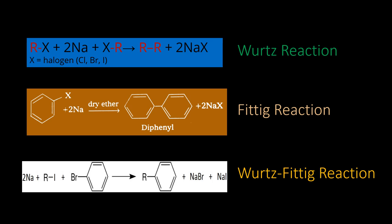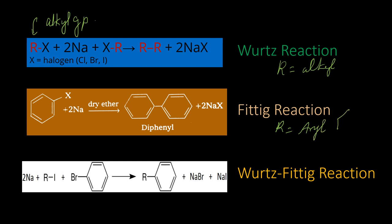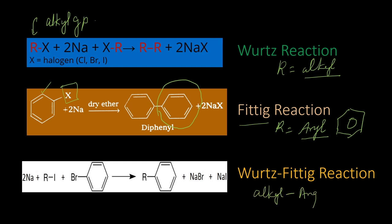To summarize: Wurtz reaction is a coupling reaction used to prepare alkanes and hydrocarbons. It prepares symmetrical alkanes. The number of carbon atoms in the product is even. It uses only dry solvents — dry ether or tetrahydrofuran — because sodium metal reacts violently with water. Wurtz reaction uses aliphatic alkyl halides, Fittig reaction uses aryl halides, and Wurtz-Fittig reaction uses a combination of alkyl and aryl halides.